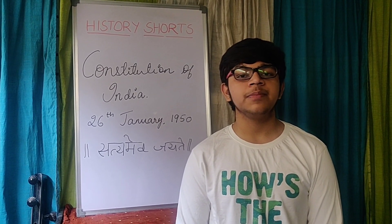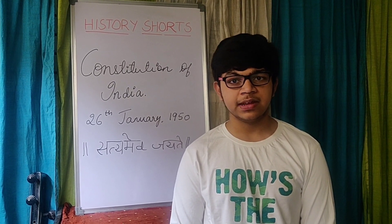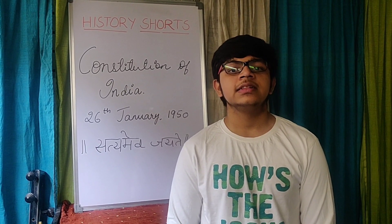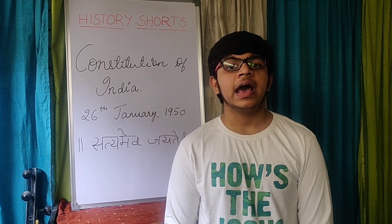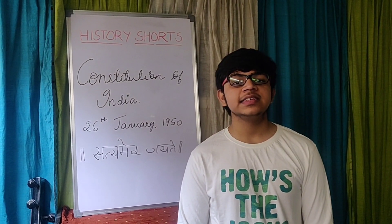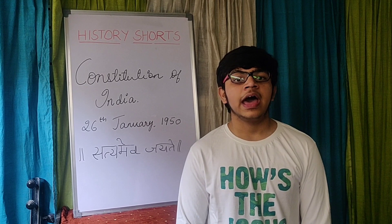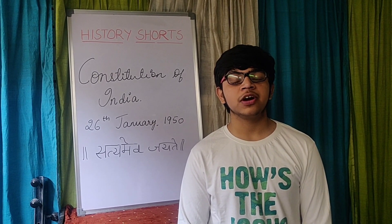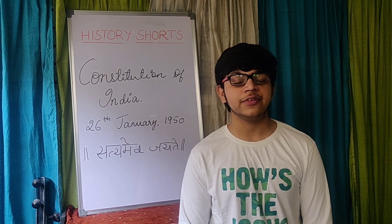Once India got independence from the British, from 1947 to 1950, the same legislation continued to be implemented as India was a dominion of Britain for those three years. India ceased to be a dominion of the British Crown and became a sovereign democratic republic on 26th January 1950.